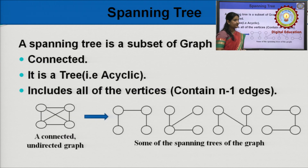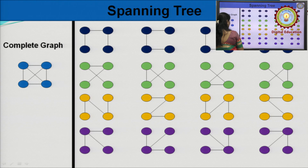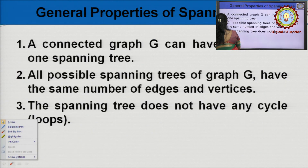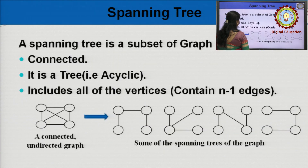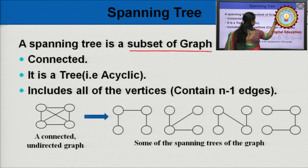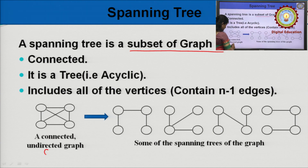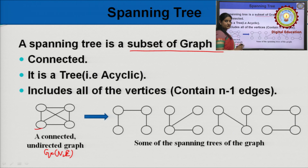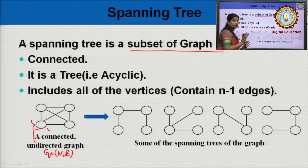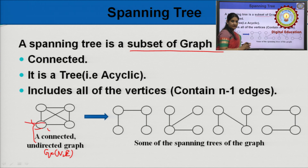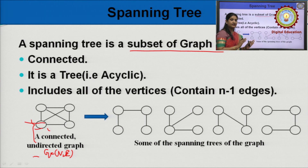First, we discuss what is the spanning tree. A spanning tree is a subset of graph G. That means, there is a graph G and graph G contains two tuples V and E. V is the set of vertices and E is the set of edges. A spanning tree is the subgraph of G — not both vertices and edges, just a subgraph of edges — that includes all the vertices with minimum number of edges and does not have any cycle, and it cannot be disconnected.